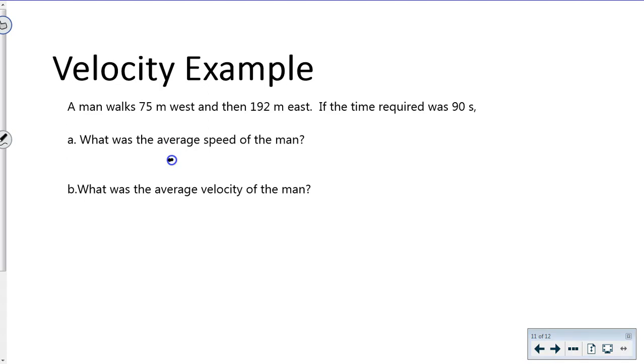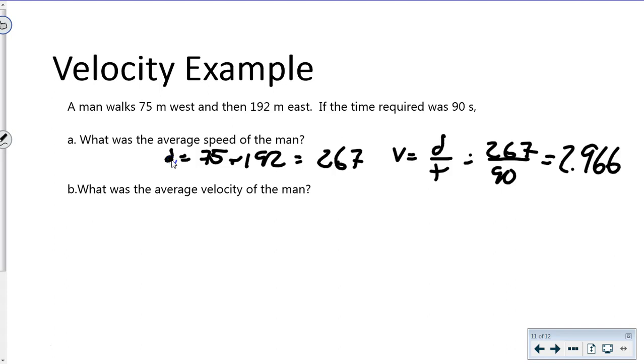We plug that into our speed formula: distance over time, which gives us 267 divided by 90, equals 2.996. With two significant digits, we round to 3.0 meters per second. No direction since we have speed.